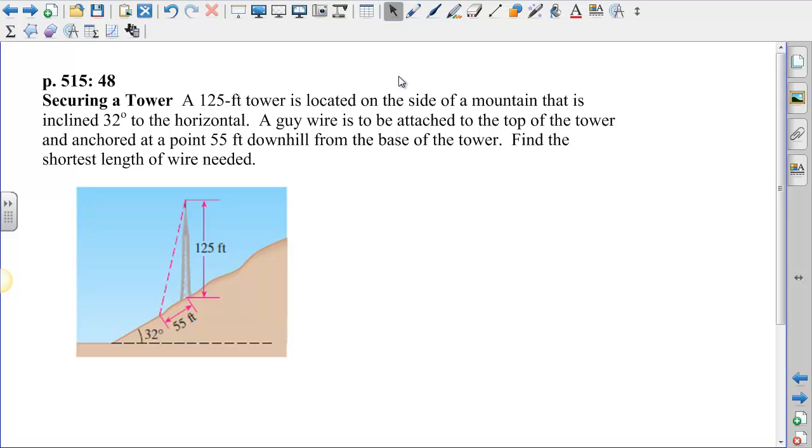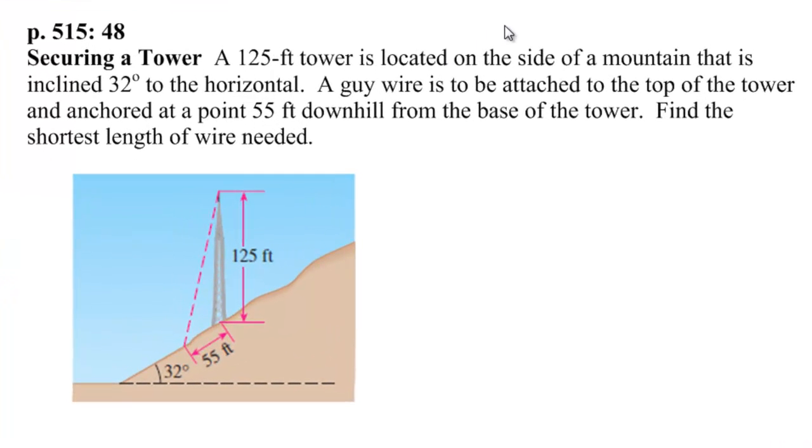This is our last example problem using law of cosines, and it's about securing a tower. A 125-foot tower is located on the side of a mountain inclined at 32 degrees to the horizontal. A guy wire is to be attached to the top of the tower and anchored at a point 55 feet downhill from the base of the tower. Find the shortest length of wire needed.